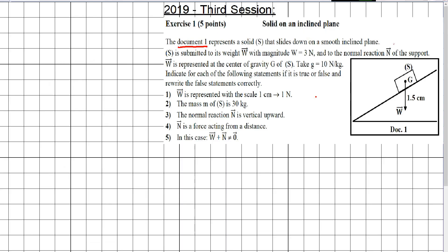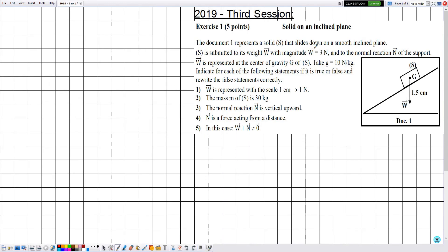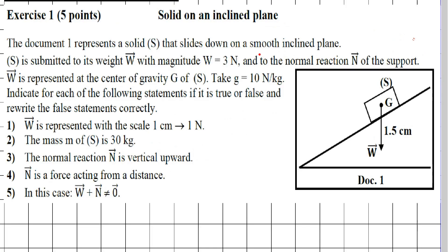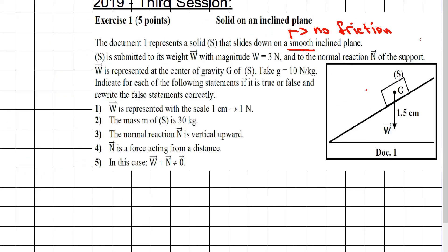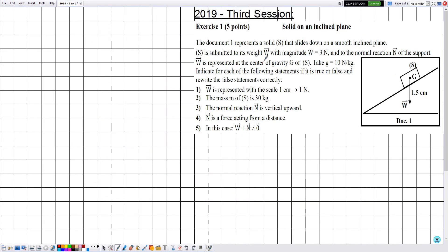Document one represents a solid S that slides down on a smooth inclined plane. By smooth, they mean that friction is neglected — so no friction between the inclined plane and the solid S. S is submitted to its weight vector W and to the normal reaction N of the support. W is represented at the center of gravity G of S.